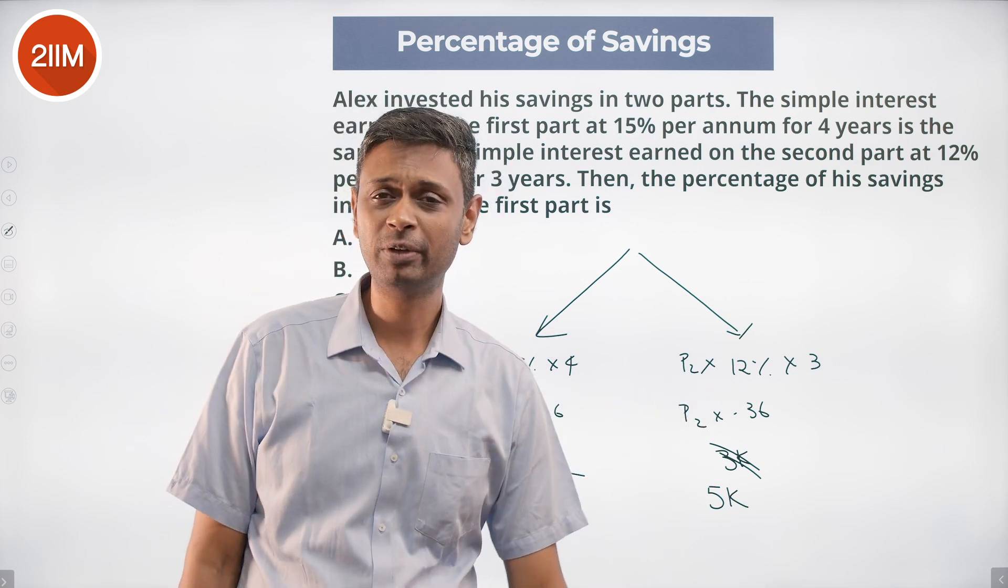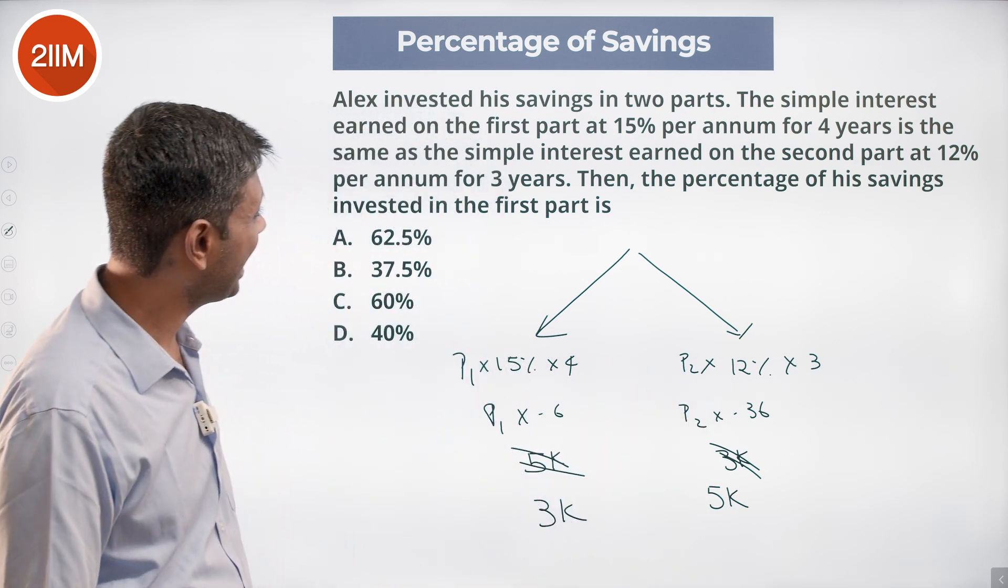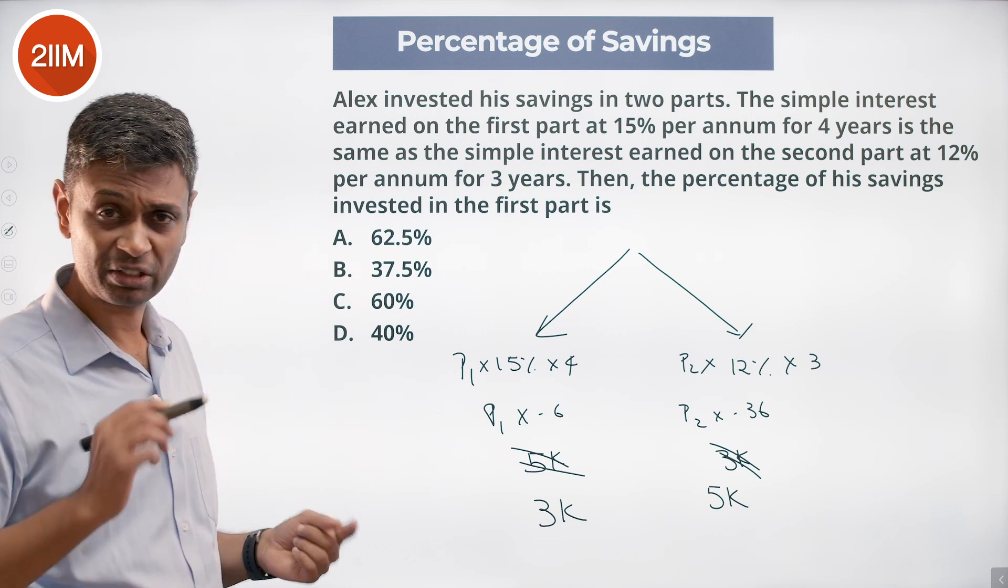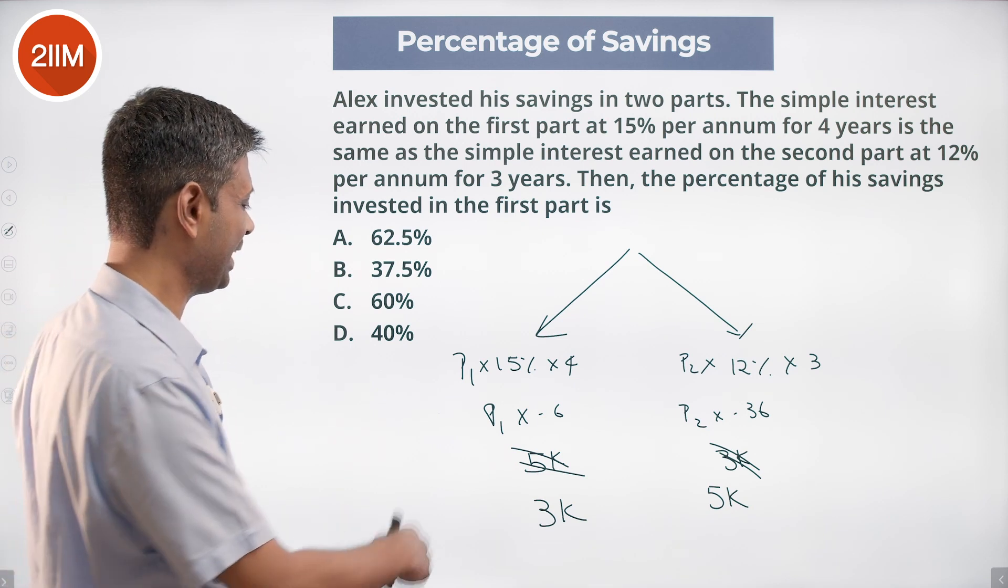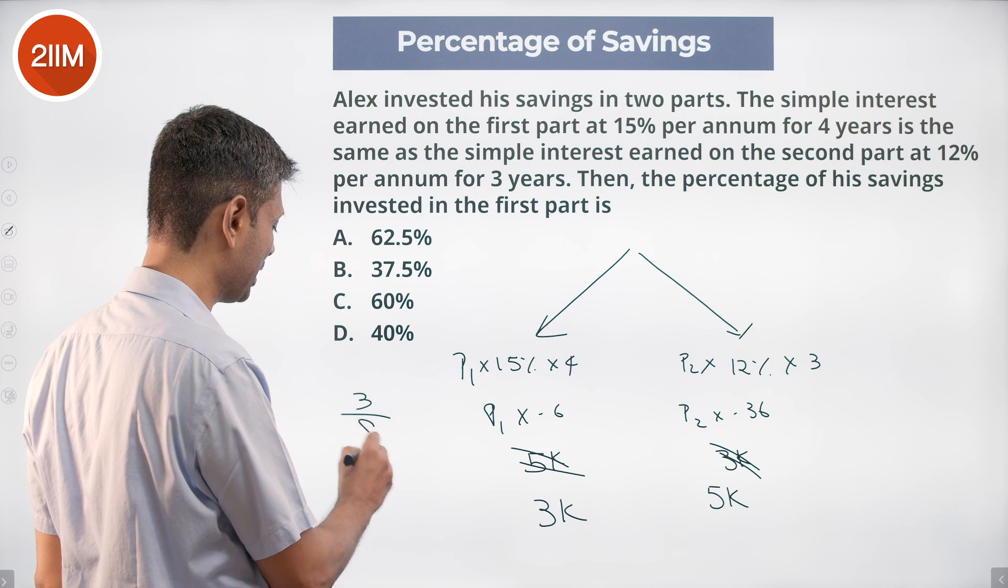P1 is to P2 is 3 is to 5. The percentage of the savings invested in the first part is 3 by 8. 3/8 is invested. 1 by 8 is 12 and a half.